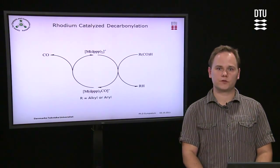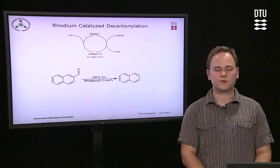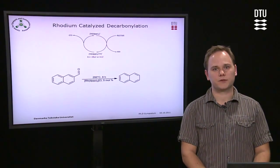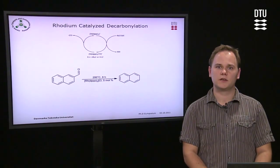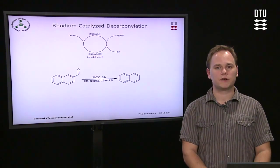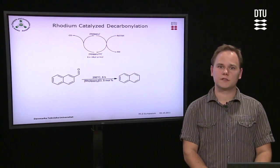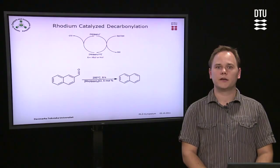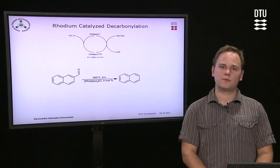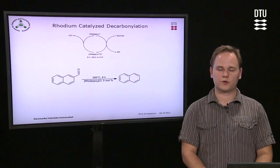What you do is use an organic substrate such as 2-naphthaldehyde to generate naphthalene. That can be done at around 160 degrees or even lower, and at fairly ambient pressures.